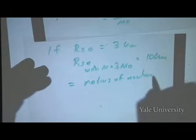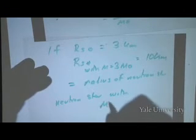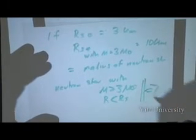So, a neutron star with mass greater than three times the mass of the Sun has a radius less than its Schwarzschild radius. And that's a black hole, remember?